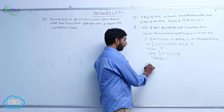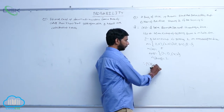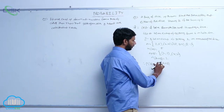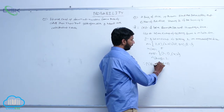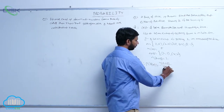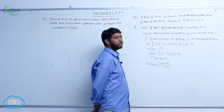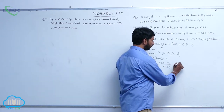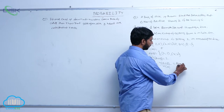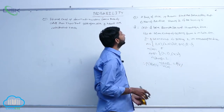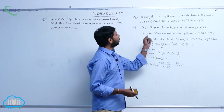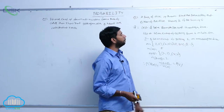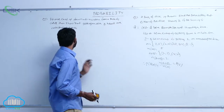Therefore, P(B given A) equals N(A intersection B) divided by N(A), which is 2 by 5. This is the probability that either of the dice shows 2, given that the sum is 6.